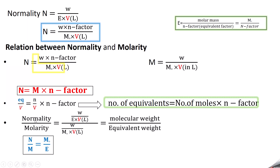Dividing normality by molarity: using W/(E×V) divided by W/(M₀×V), the volume and weight cancel, giving M₀/E. Therefore normality divided by molarity equals molecular weight divided by equivalent weight. This formula can also be used to solve problems.